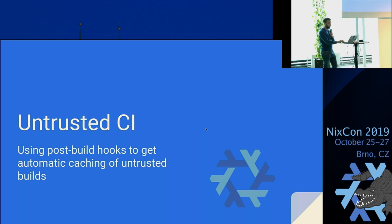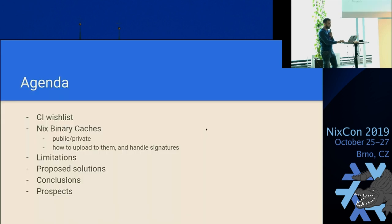Today I'm going to talk about untrusted CI and how to use post-build hooks to get automatic caching of untrusted builds. I'll be talking about CI in general, what you want a CI to do and how you want it to behave, about Nix binary caches in general, how to use private caches and how to handle signing of those builds in the private caches, how to handle limitations in simple implementations, the proposed solution, how this improves things in general, and future ideas on what to do with it.